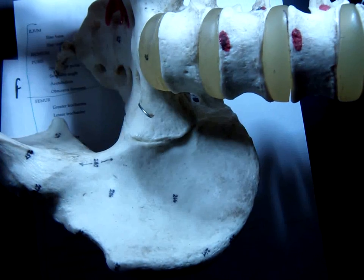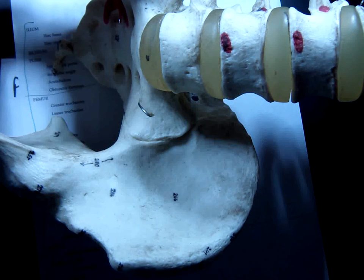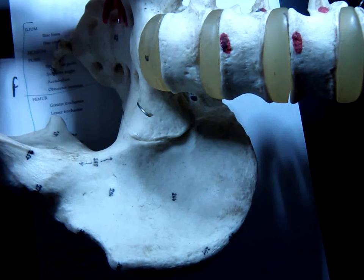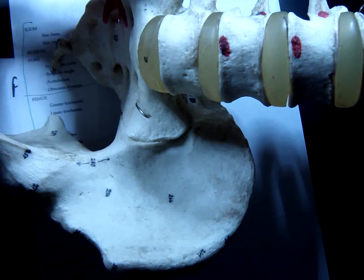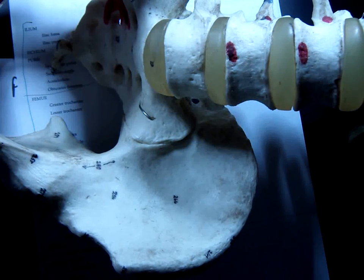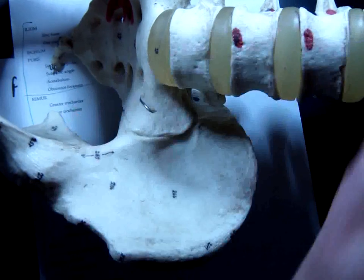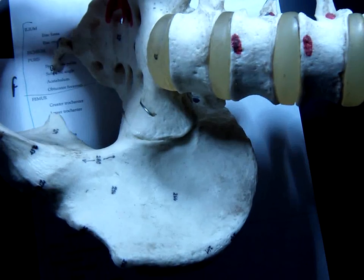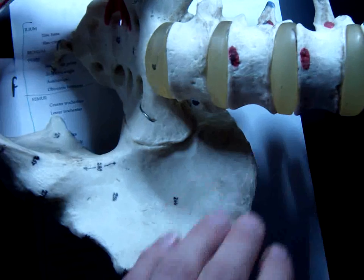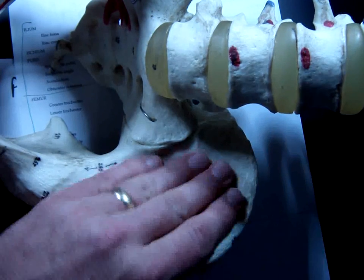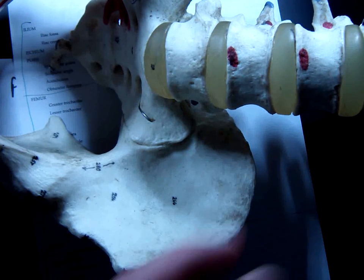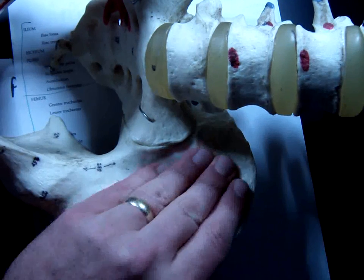That's the iliac crest. Now, we learned a word that means shallow indention. What was that word? Fossa. And that's what this is. This is the iliac fossa. This is a pretty huge bone. Structurally, it's important. There's a lot of muscles that attach to it. Your pelvis is also called the pelvic girdle of the body because that's the part of the body that attaches your legs to your torso, just like your scapula and your clavicle make up the pectoral girdle, which attach your arms to your torso.